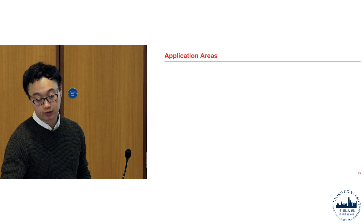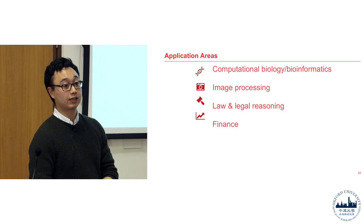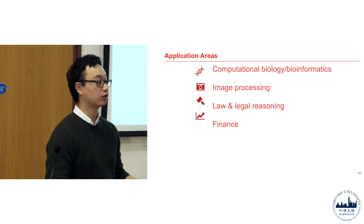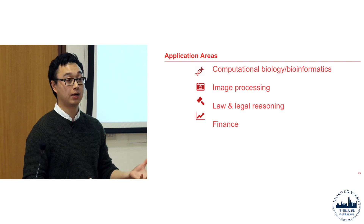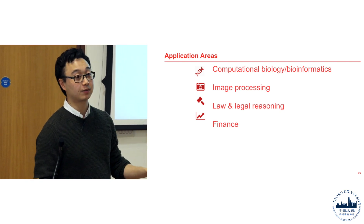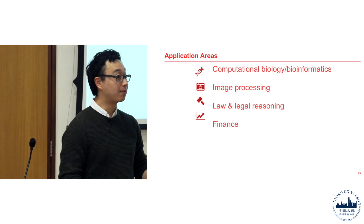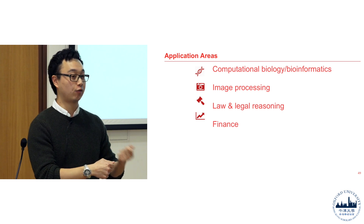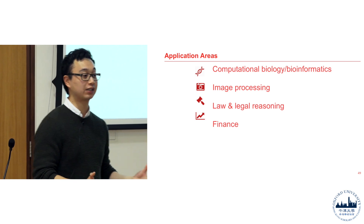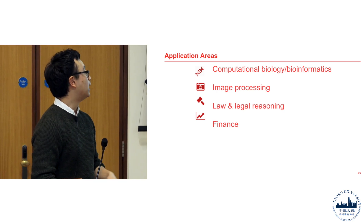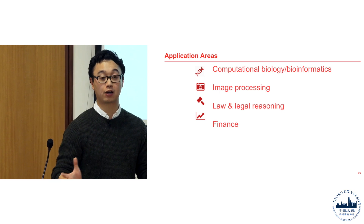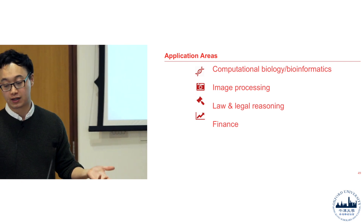We generally build these networks to classify or to understand problems through reasoning. Bayesian networks have been used in computational biology and bioinformatics — for example, which drug compounds are most effective against different ligands, or which drugs are most likely useful for particular diseases. They're also used in image processing, legal reasoning — reasoning through cases to determine criminal conviction — and in finance to predict stock market movements.